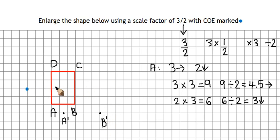Same process for C, that's 6 right and 2 up. Now 6 times 3 is 18, divided by 2 is 9. And then 2 times 3 is 6, divided by 2 is 3, so it's going to go 3 squares up.